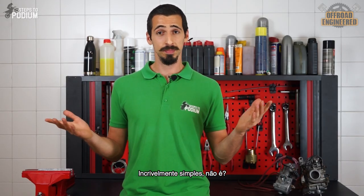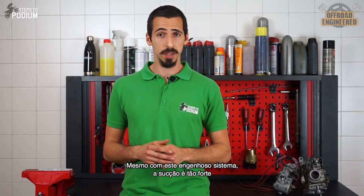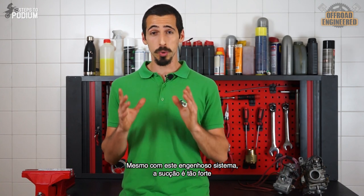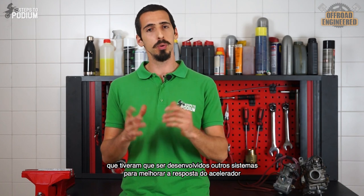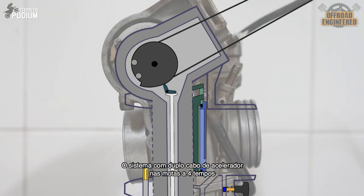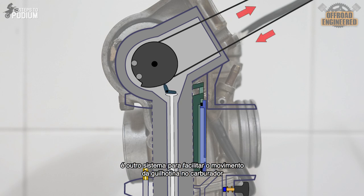Incredibly simple, right? Even with this clever system, the suction created is so strong that other systems had to be developed to further improve throttle response. The double cable throttle system on four-strokes is an extra way to help the slide move more easily on a carb. While one cable is pulling, the other is pushing.